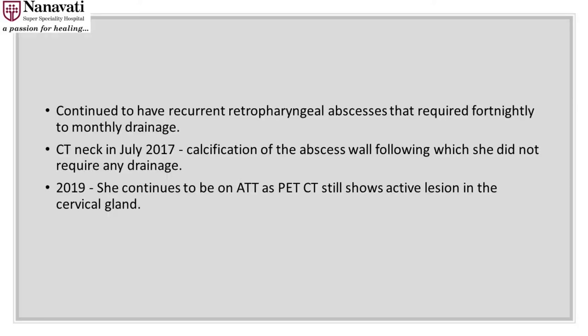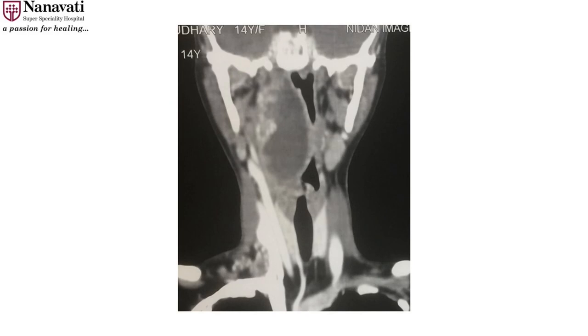She continued to have recurrent retropharyngeal abscesses requiring fortnightly to monthly drainage — about seven to eight times in total. Finally in July 2017, it was difficult to aspirate, so a CT scan showed calcification of the abscess wall and we did not drain further. However, she continued to need anti-TB treatment as her PET-CT still shows an active lesion in the cervical gland, though the abscess is now completely resolved.